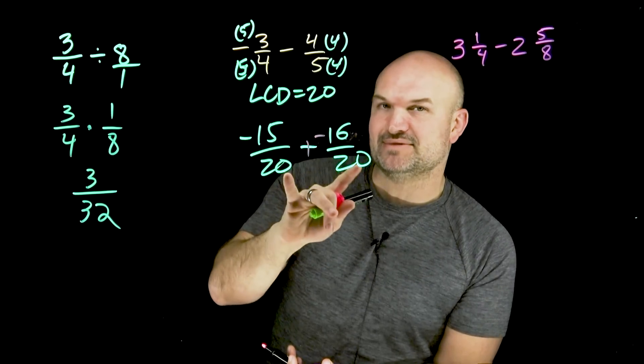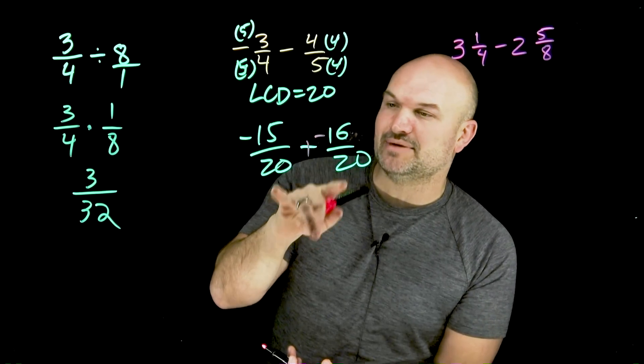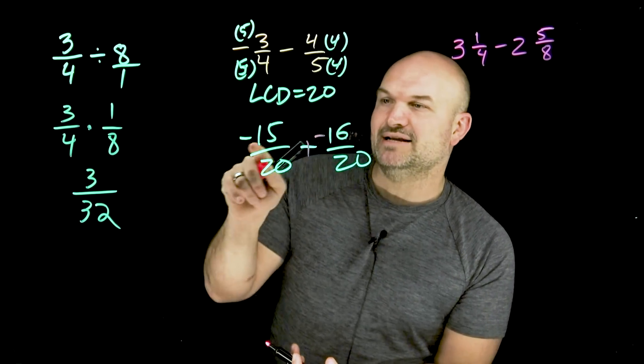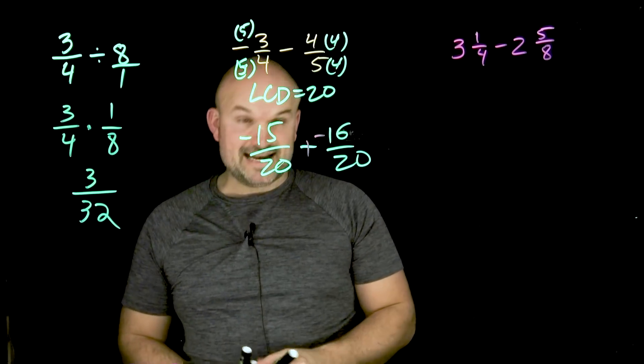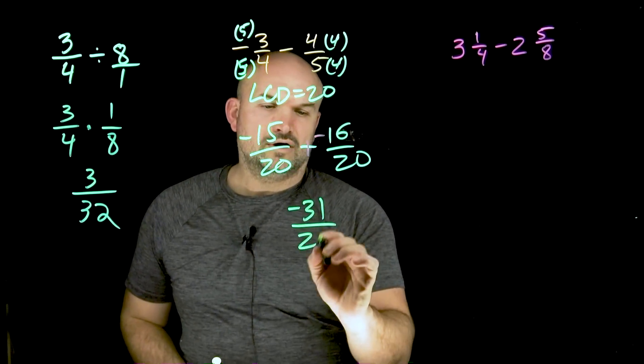When we're adding fractions and they have a common denominator, we're going to keep the common denominator the same, and we're just going to add our two numerators. In this case, I have a negative 15 plus a negative 16, which is going to be a negative 31 all over a 20.